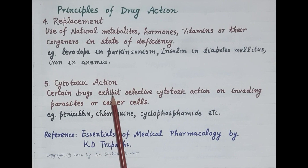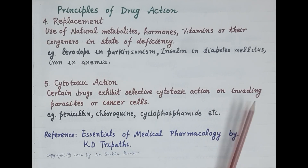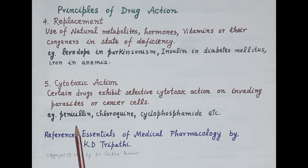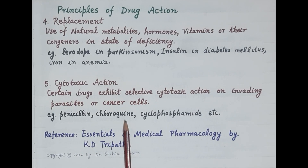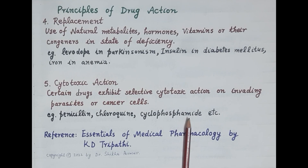The fifth type of drug action is cytotoxic action. Certain drugs exhibit selective cytotoxic action — they are toxic and destroy invading parasites or cancerous cells. For example, penicillin kills bacteria, chloroquine is toxic to the malarial parasite, and cyclophosphamide is toxic to cancerous cells.